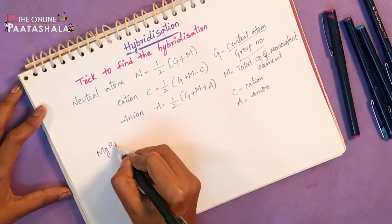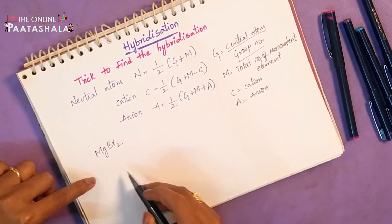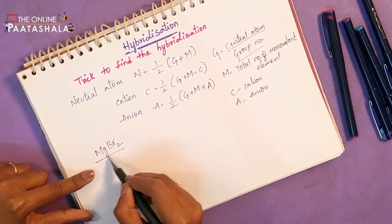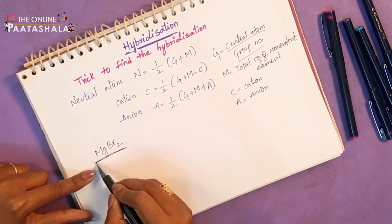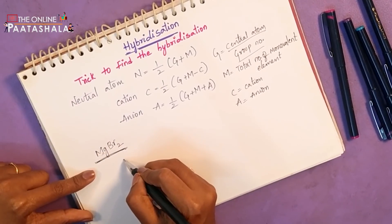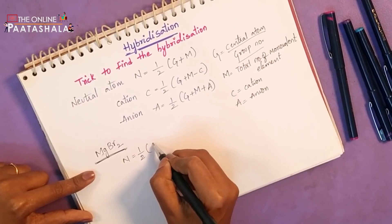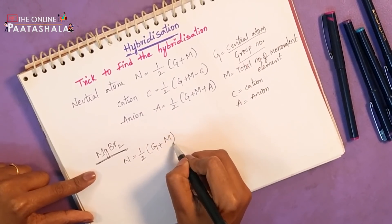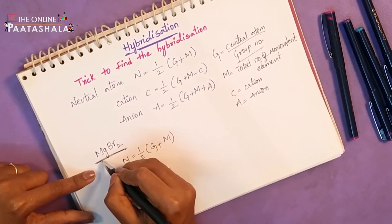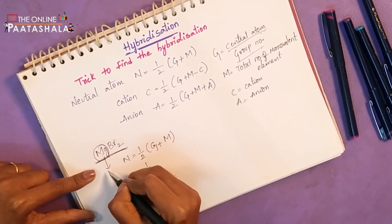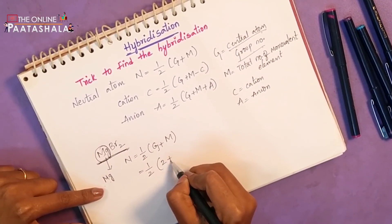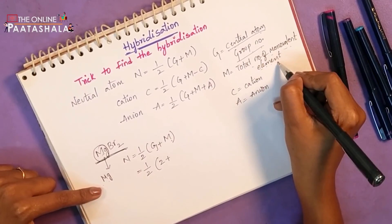First, suppose we take MgBr₂. In this MgBr₂, what is the central atom? Magnesium. This is a neutral atom — it does not have any charge, so it is not a cation or an anion. The neutral atom formula is: 1/2 of (G + M). What is G? The central atom group number. Here, magnesium is the central atom. What is the group number of magnesium? That is 2.